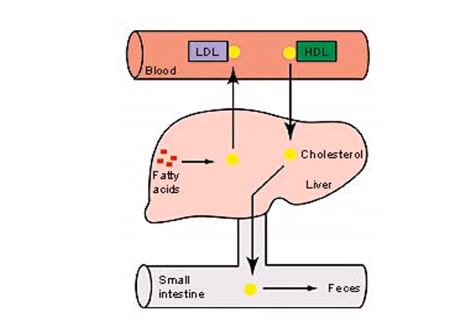Cholesterol is an essential steroid — it must be made because it is a precursor to all of our steroid hormones. Blood levels of cholesterol are regulated by the liver. If cholesterol is absent from the diet, the liver will synthesize it from fatty acids. If blood levels of cholesterol are excessive, the liver will secrete it into the bile, which delivers it to the small intestines to be eliminated in the feces.